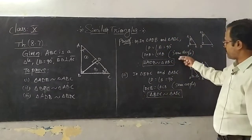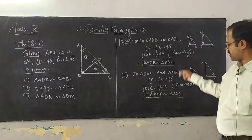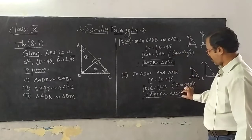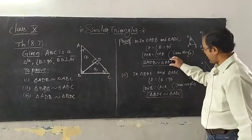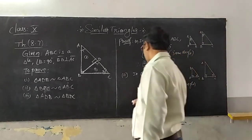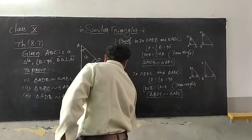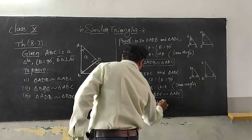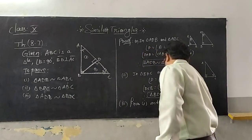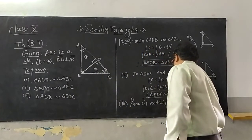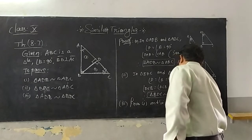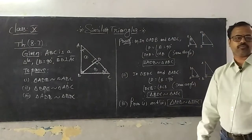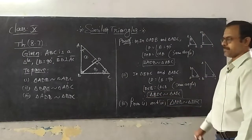Since ABC is common in both the first and second cases, if we remove this common triangle, we can say from cases one and two that triangle ADB is similar to triangle BDC. This is your third proof, and the third case is also completed.